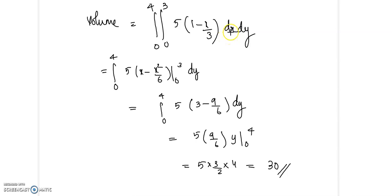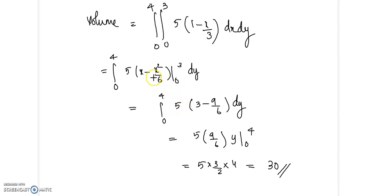First we need to integrate with respect to x. We get the integral from 0 to 4 of 5 times [x minus x²/6] evaluated from 0 to 3. Applying the limits gives 5 times (3 minus 9/6), which simplifies to 5 times 9/6, dy.